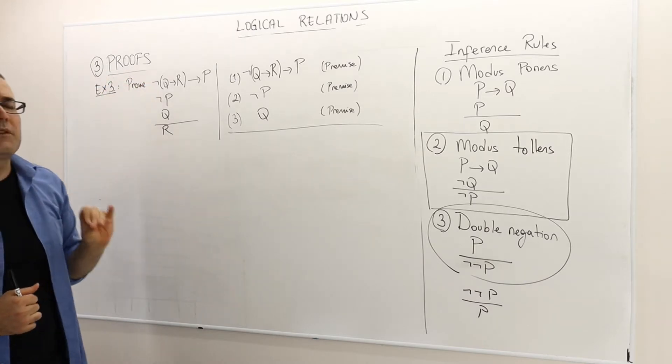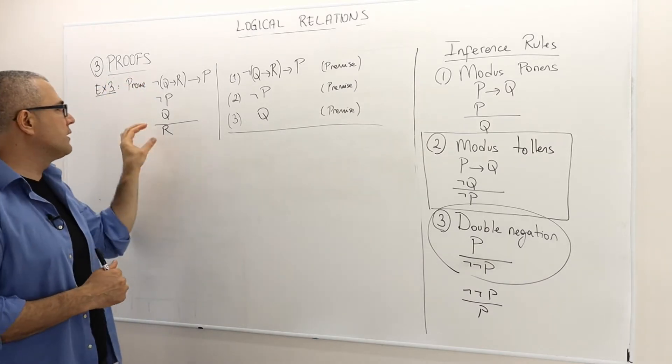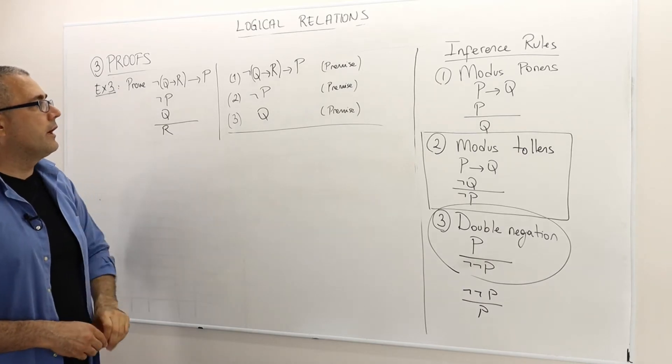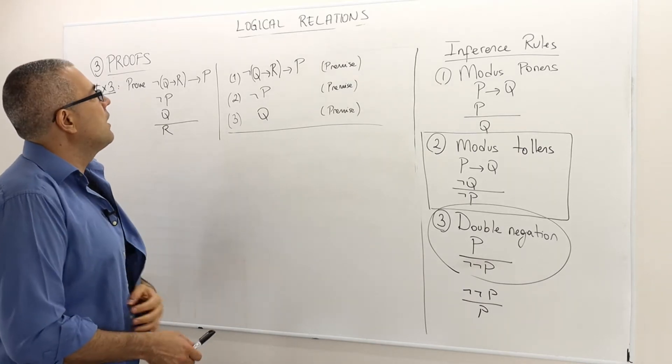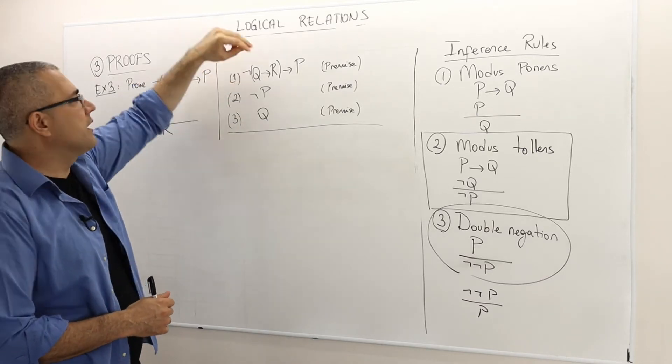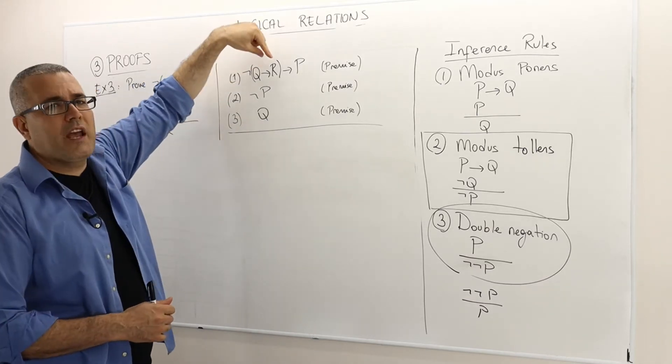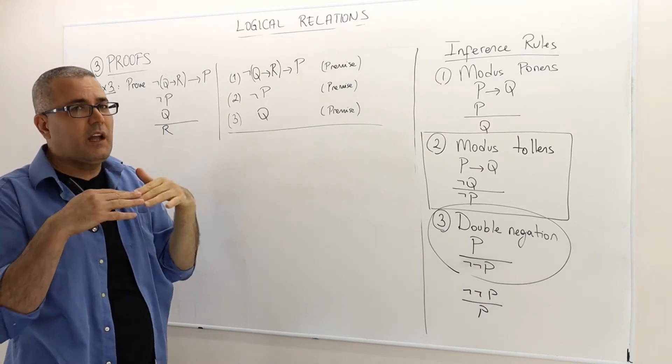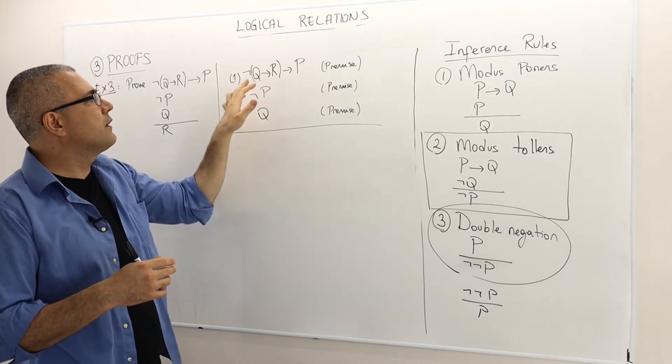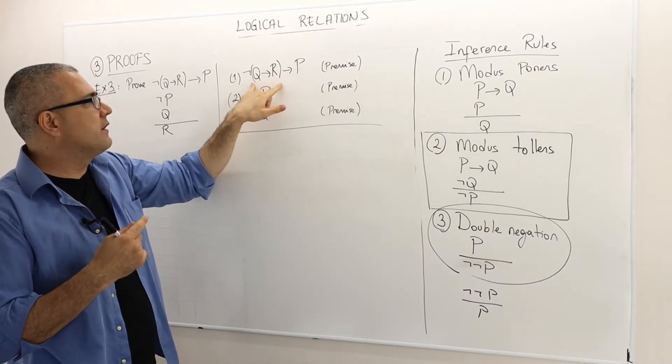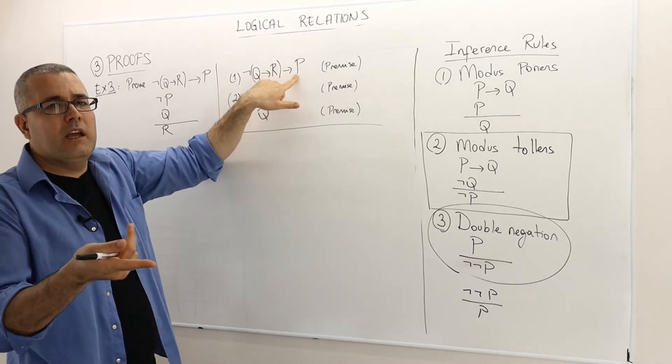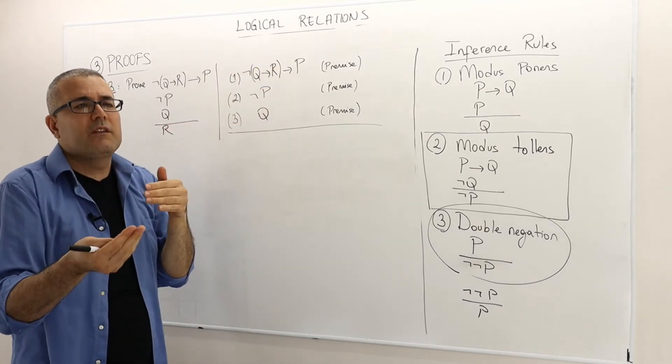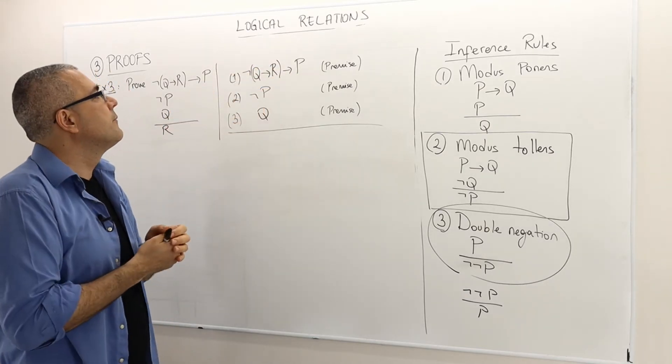So assuming that these three premises are true, I need to show that the conclusion, which is R, must be true. Be careful. This not sign is in front of this bracket. And this bracket is a conditional sentence. It's not an atomic sentence. So therefore the negation of the conditional sentence implies an atomic sentence. So therefore this is a relatively more complicated conditional sentence.